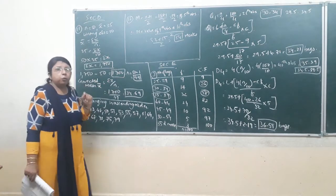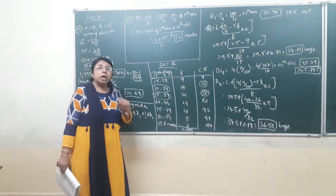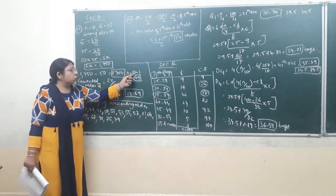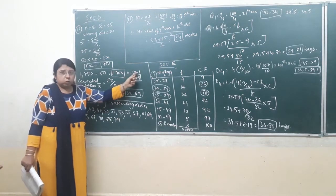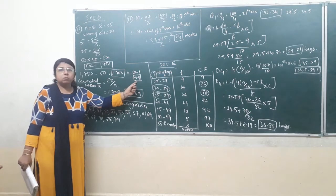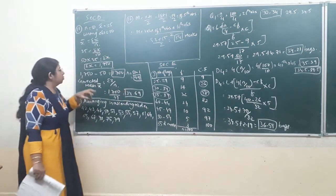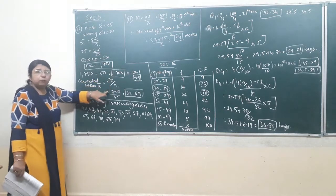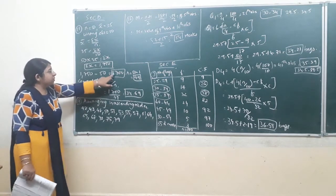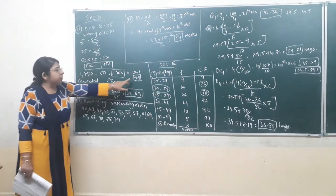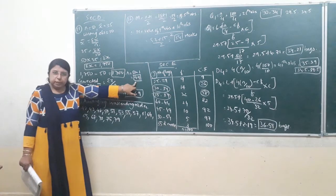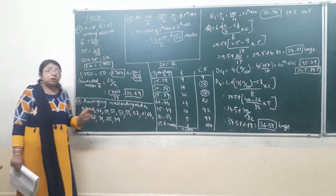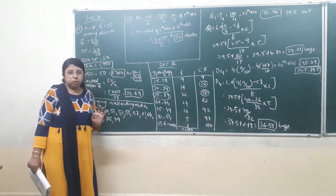As we said in the question, we have to find the corrected mean after excluding that one wrong observation. So previously there were total observations of 50. Now we are excluding one observation, so now the value of n would come to 49. Now we will find the corrected mean by taking the corrected value of sigma x and corrected value of n. So sigma x upon n: sigma x is equal to 1700 and n is equal to 49. So 1700 divided by 49 is equal to 34.69. So that is the corrected mean after excluding the wrong observation.